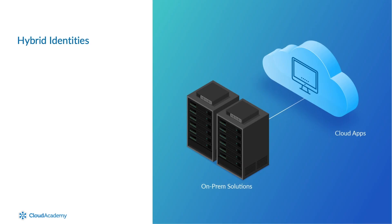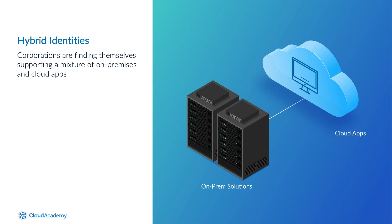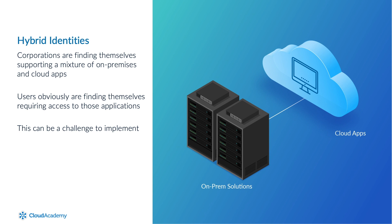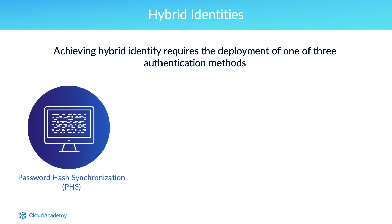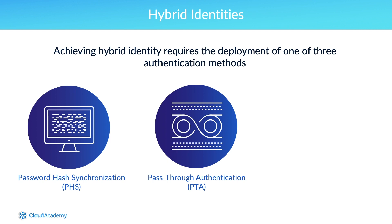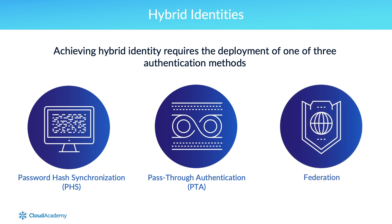As the move to the cloud gathers steam, corporations are finding themselves supporting a mixture of on-prem and cloud applications, and users are finding themselves requiring access to those applications as well. Achieving hybrid identity requires the development of one of three authentication methods: password hash synchronization, or PHS; pass-through authentication, or PTA; and federation.